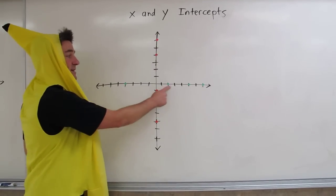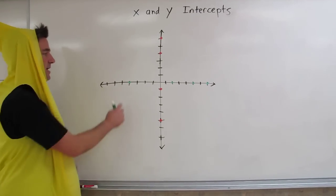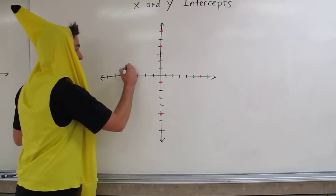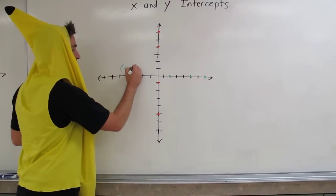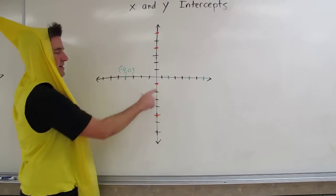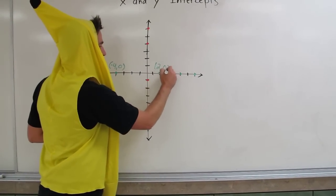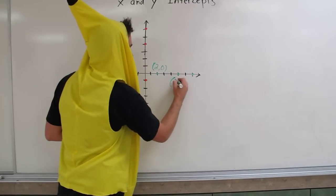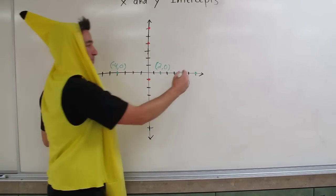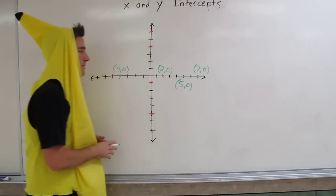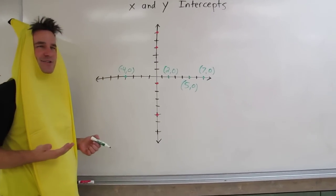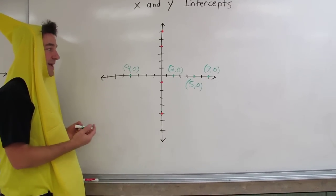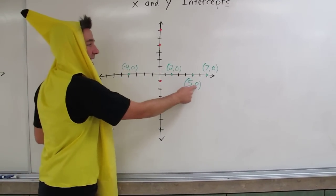So let's actually find the coordinates of each of these green points — the x-intercepts. This one right here is negative 4, 0. This point right here is 2, 0. This point here is 5, 0. And this last point is 7, 0. Other than all being x-intercepts, you may notice that all of them have 0 as the y-coordinate.